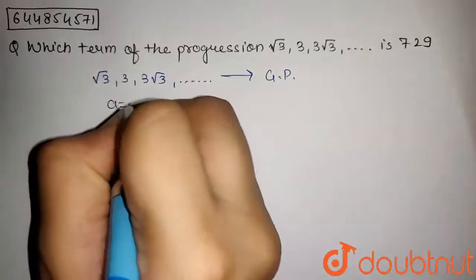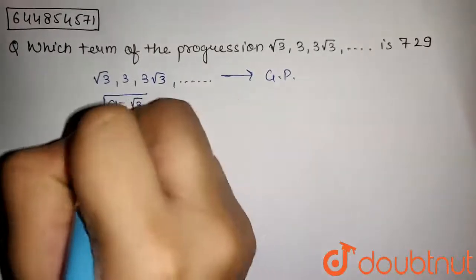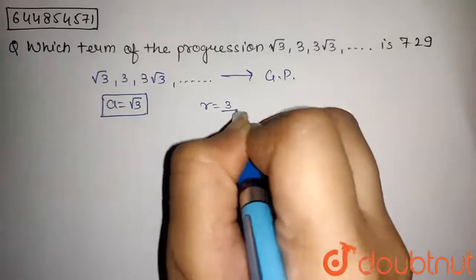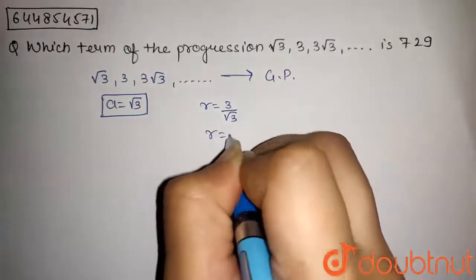The first term will be a = √3. The common ratio will be 3/√3, that is r = √3.